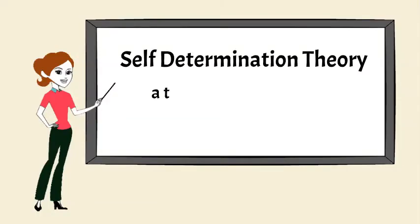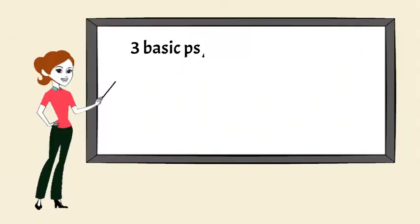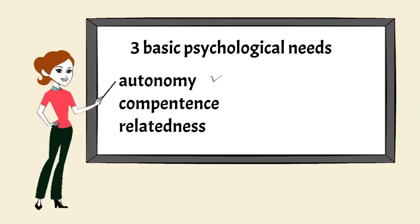Self-determination theory is a theory of motivation developed by Deci and Ryan. Deci and Ryan identified that when the three basic psychological needs of autonomy, competence, and relatedness are met, people are intrinsically motivated towards an activity.